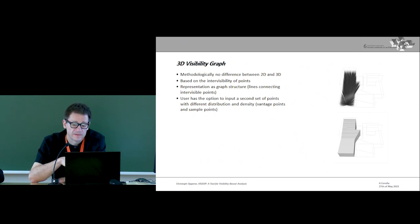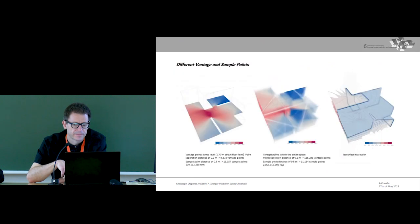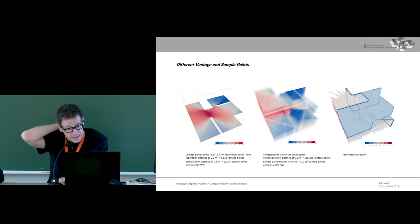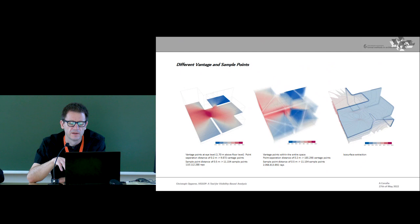What's maybe important to know is that VisApp has the option to use two point sets, which can have a different distribution and density of points. Therefore, it's possible to use a very dense, high-resolution point set as vantage locations, but use considerably less points for calculating the intervisibilities like it's done in this example.